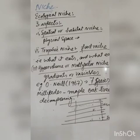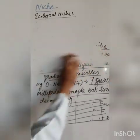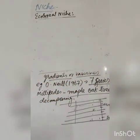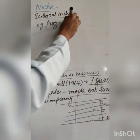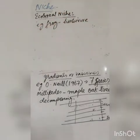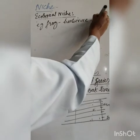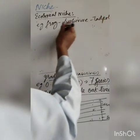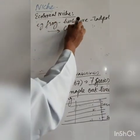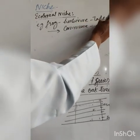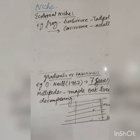It is important to note that a species may change its niche with age or season. For example, a frog is a herbivore as a tadpole, but becomes a carnivore when it is an adult. That means it has changed its niche from one stage of its life cycle to another.